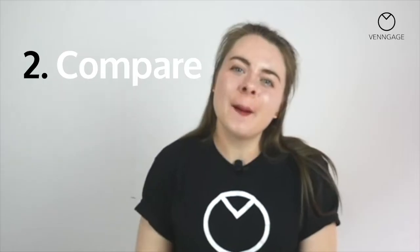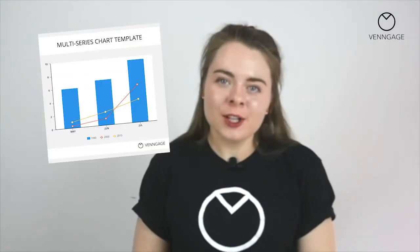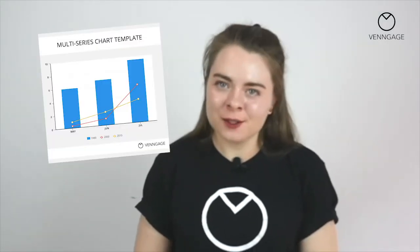The next I-CORE goal is compare. If you want to compare similarities and differences between things, then there's a ton of different chart types that could work. You can use a bar chart or a column chart to compare values. The difference between a bar chart and a column chart is that the bars in a bar chart run horizontally and the bars in a column chart run vertically.